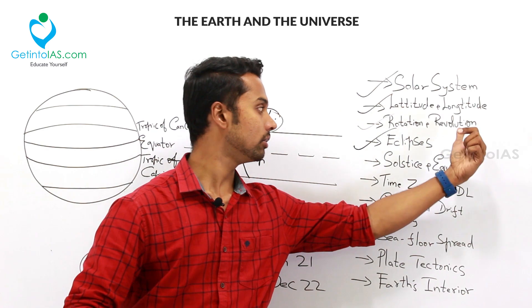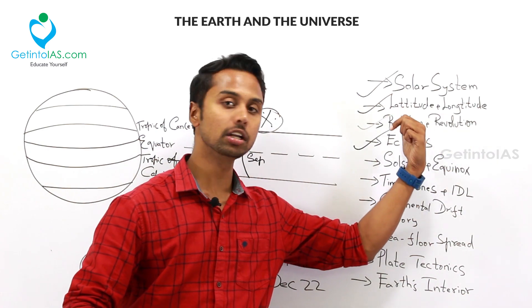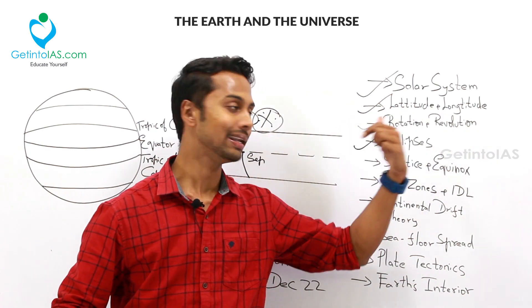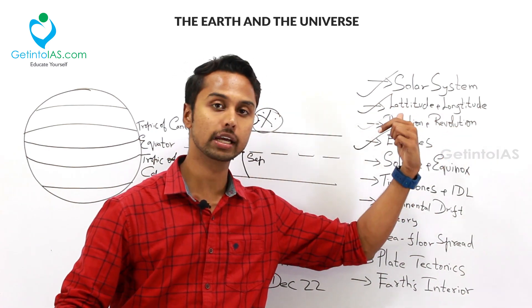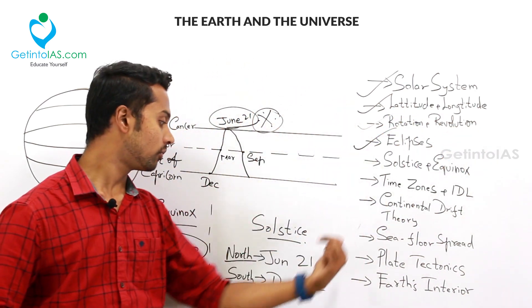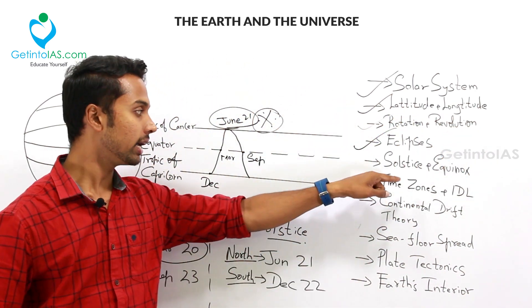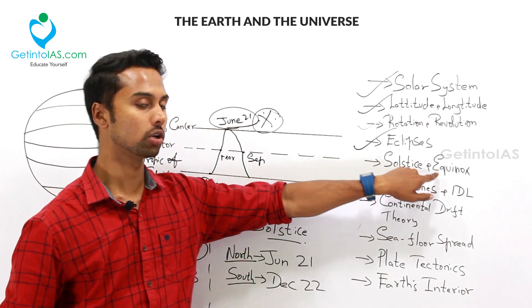Broadly, rotation causes day and night, and revolution gives rise to four seasons via solstice and equinox.